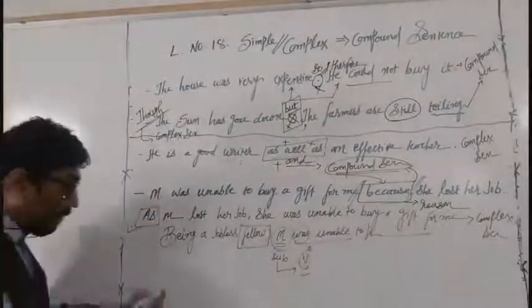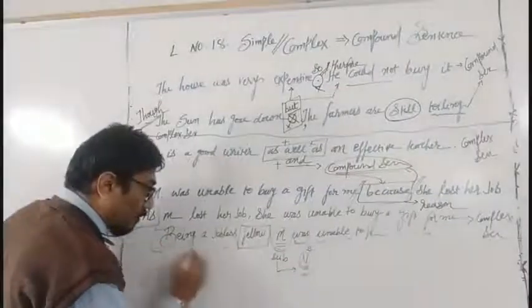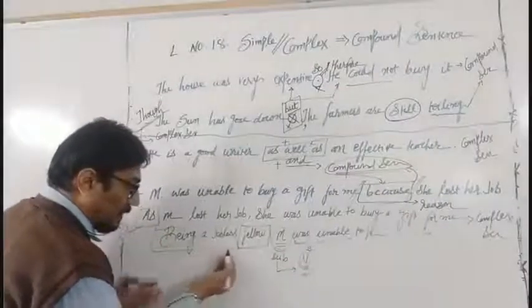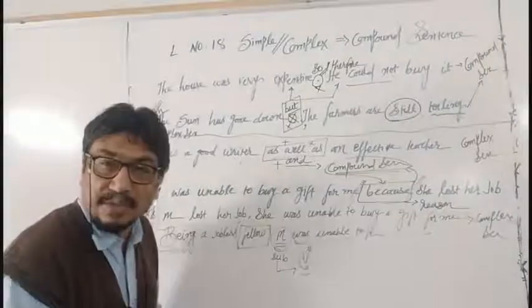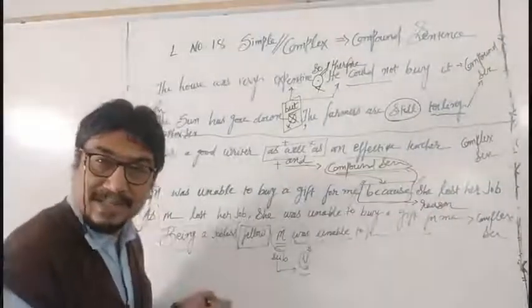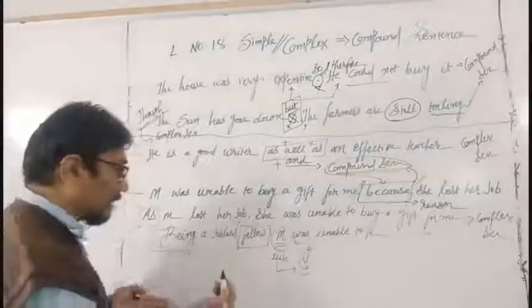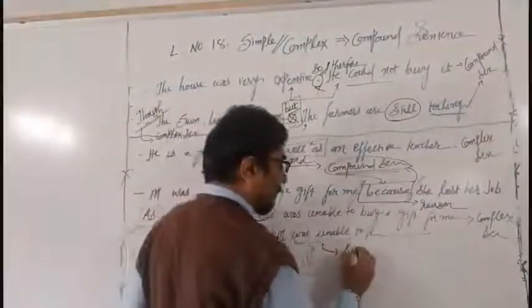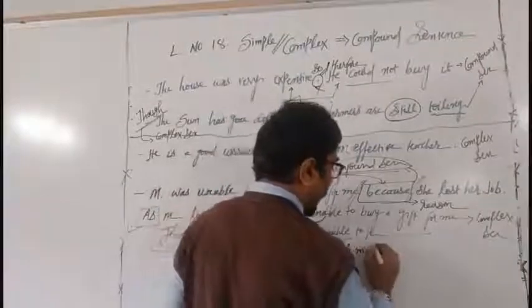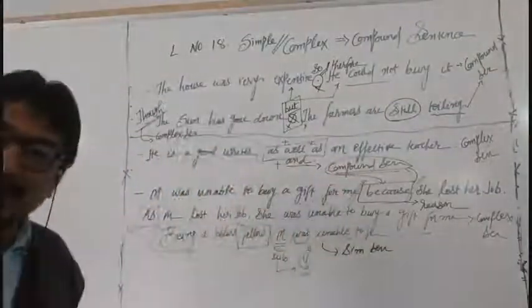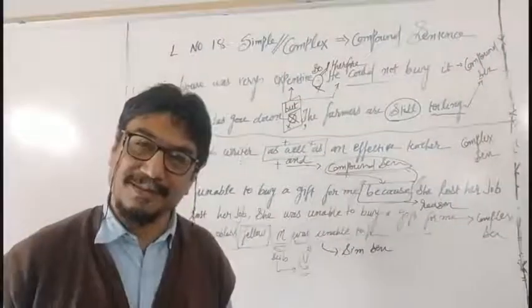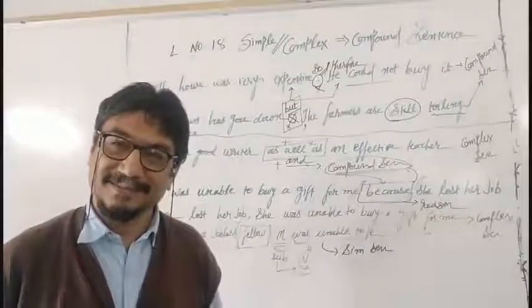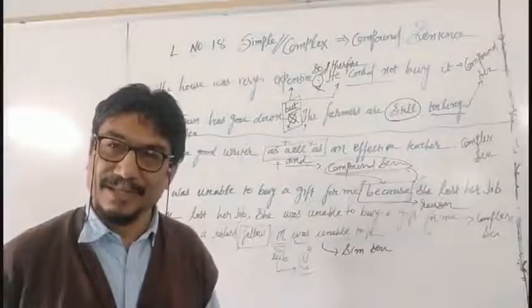Hence it is proved that 'being a jobless' — what is this? This is an extension, nothing else. Where there is no subject, where there is no verb, hence it is proved it is a simple sentence. Because only one subject, because only one verb.